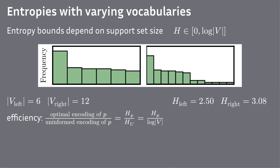This problem stems from the fact that we are comparing entropies of distributions with different vocabulary sizes. Luckily, there is entropy efficiency — how much of the entropy potential is used. It boils down to entropy divided by the vocabulary size logarithm.